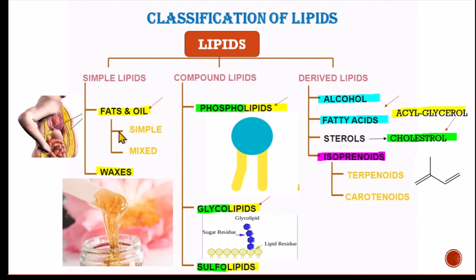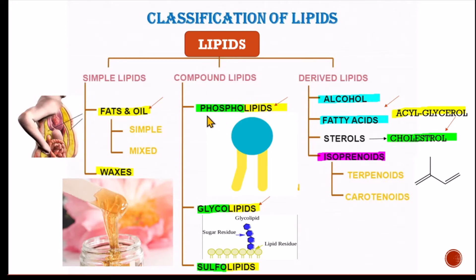Fat and oil can be simple and mixed. Next are waxes — these are sticky lipids present as a protective coating on fruits or leaves. Now, compound lipids: phospholipid — 'phospho' means phosphoric acid. If we combine it with lipids, we call it phospholipid, which contains fatty acid, glycerol, and phosphoric acid. This is a phospholipid molecule.